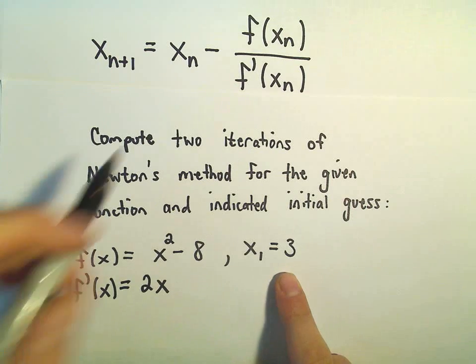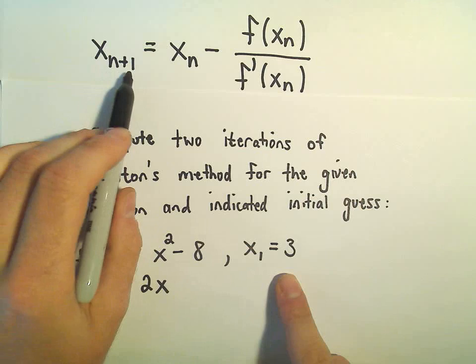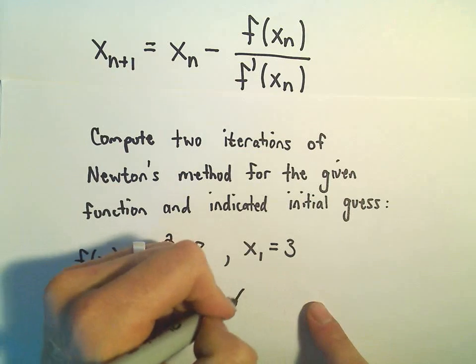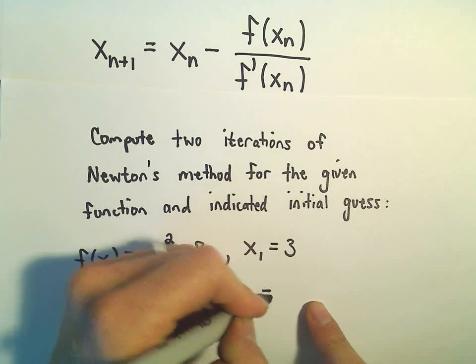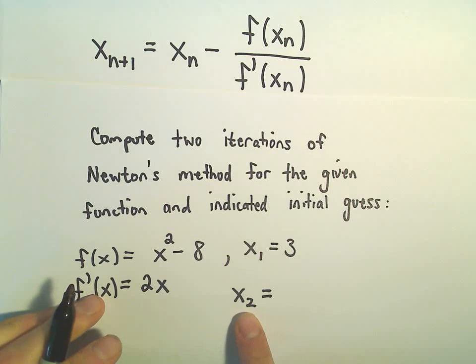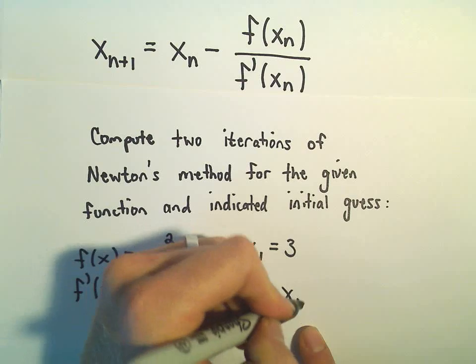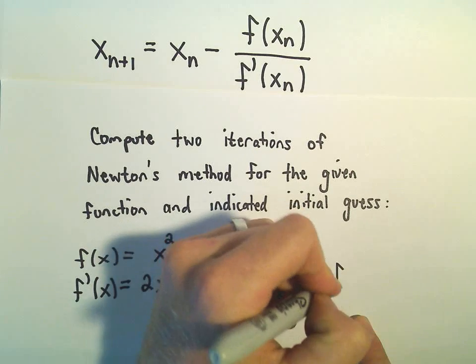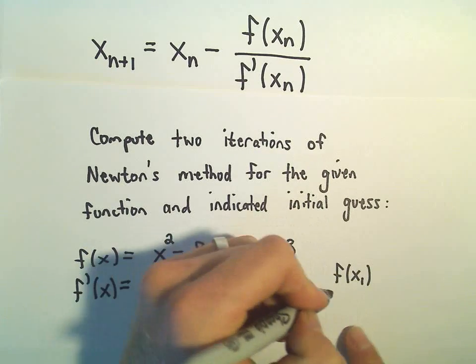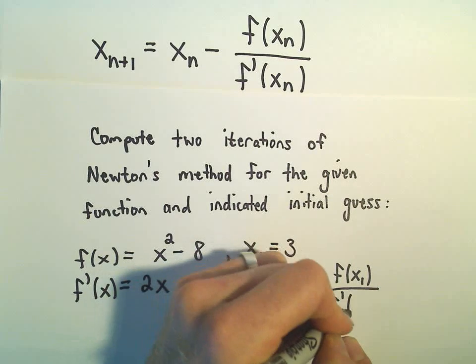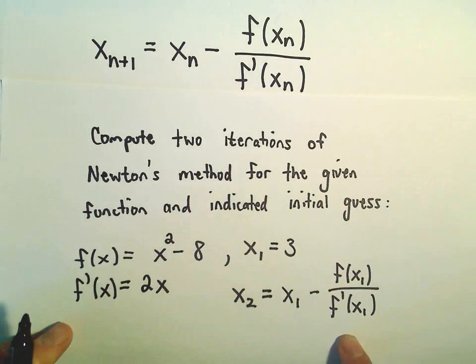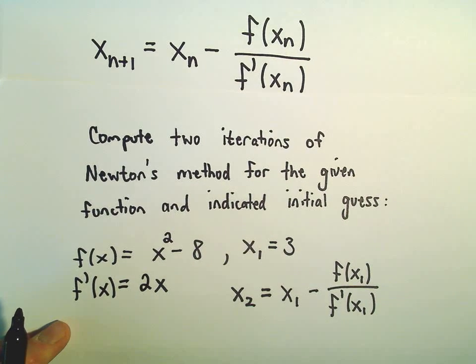So, okay, so we've got x sub 1. It says to get to the next one, so x sub 2. So my next guess, okay, so my x sub 2, it says you take the previous one, which is x sub 1, and then we subtract away, well, we plug x sub 1 into the function, and then we plug also x sub 1 into the derivative. We take that ratio and we subtract it.